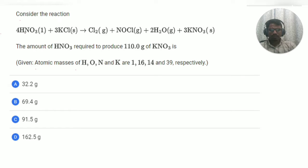Consider the reaction, we are having this reaction: 4 HNO3 and 3 KCl, giving us chlorine gas, NOCl gas, water and KNO3. And this reaction is balanced.